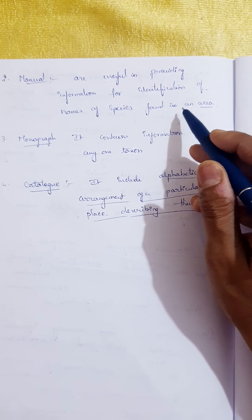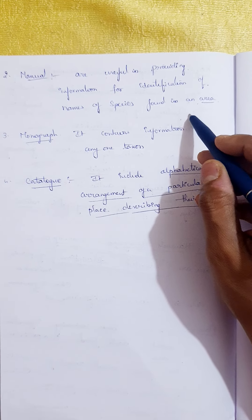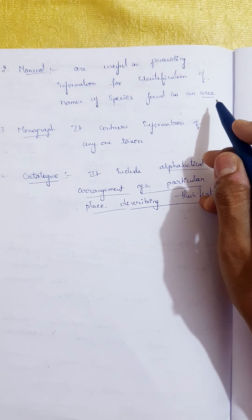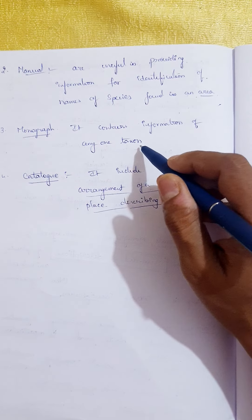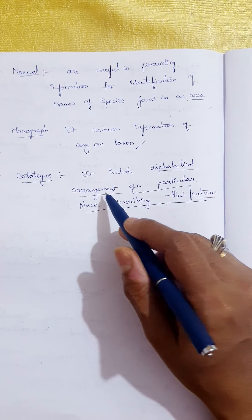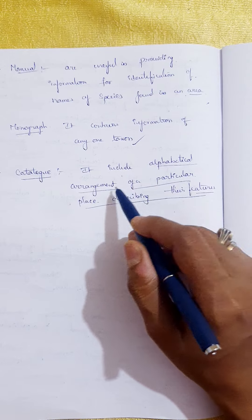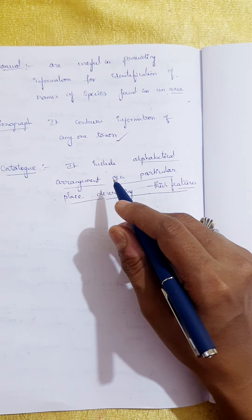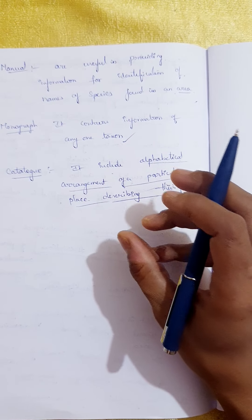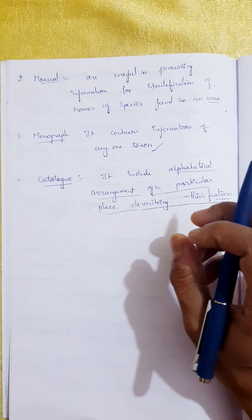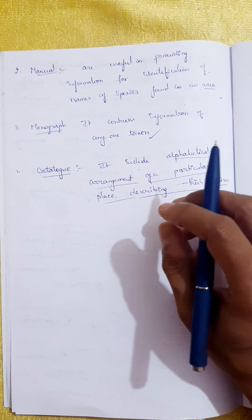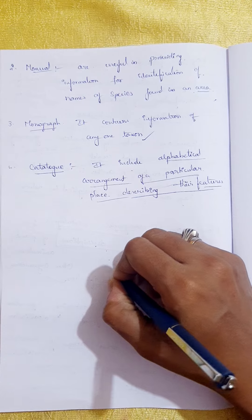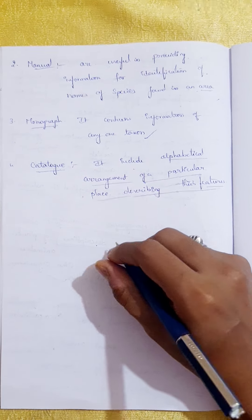Manuals are useful for providing information for the identification of the names of species found in an area. Monographs contain information about any one particular taxon. Catalogs include an alphabetical arrangement of a particular place describing their features — that is, a particular type of information organized systematically. So far we have been discussing herbarium, museums, botanical gardens, zoological parks, and keys.